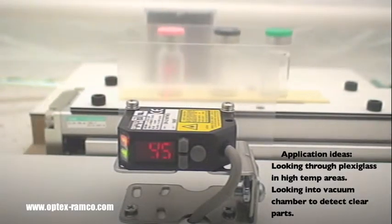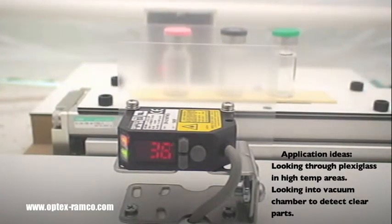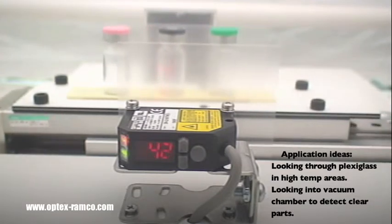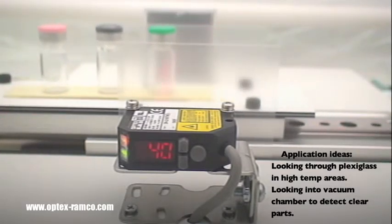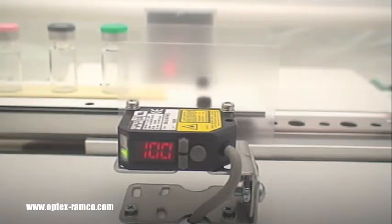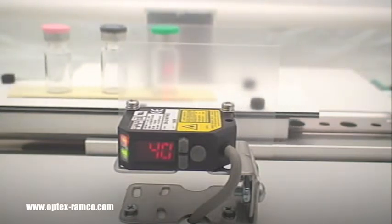Another idea might be looking through a vacuum chamber and detecting transparent parts inside. You ignore the glass chamber but detect the parts that are inside.